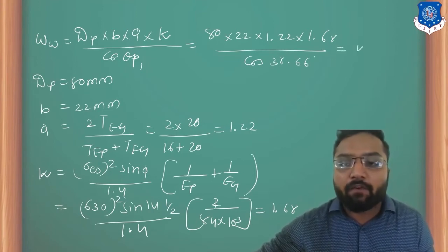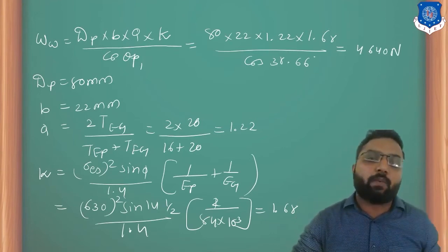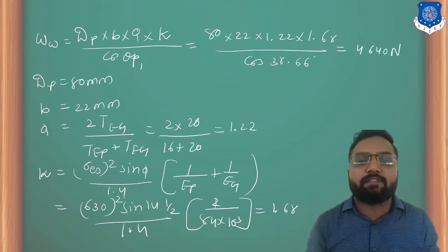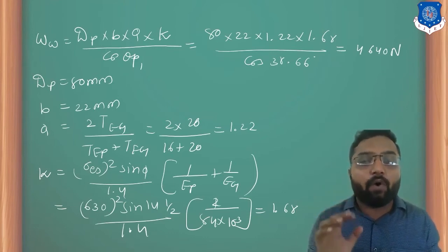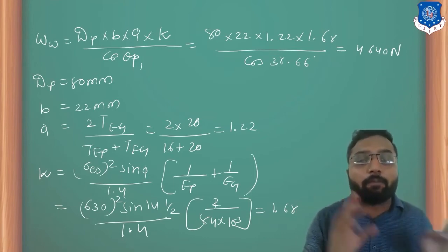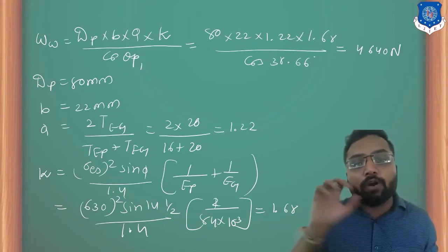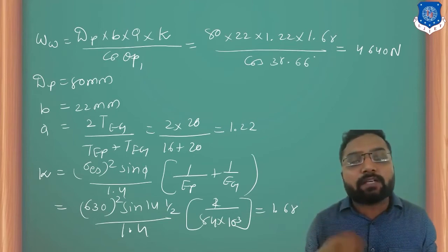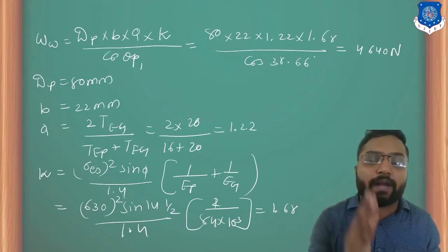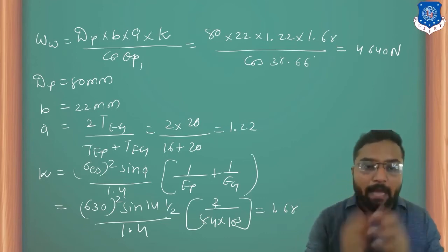Putting all values into the wear load equation: WW = 80 × 22 × 1.22 × 1.68 / cos(38.66°) = 4640 Newtons. The face width value of 22 mm is taken from the design data book for this particular module value of 5 and particular material.